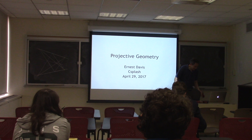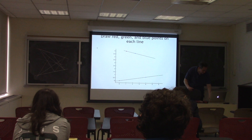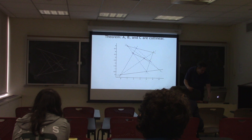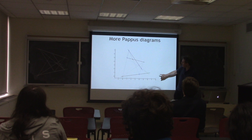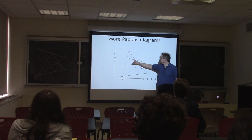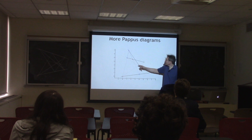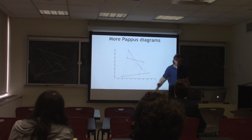Let me show you some more examples. Draw two lines, red, green, and blue points on each line, connect all points of different colors, mark the three crossing points, and they are collinear. Here is red, blue, and green, and here is blue, green, and red. So they don't have to be in the same order. One of the crossing points lies outside rather than in the middle, but they're still collinear.